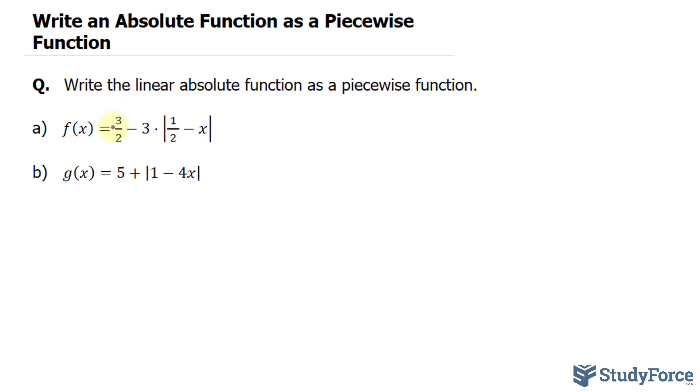We have the function f of x is equal to 3 over 2 minus 3, and 3 is being multiplied to 1 over 2 minus x in between these two bars, which is the absolute part of the function.